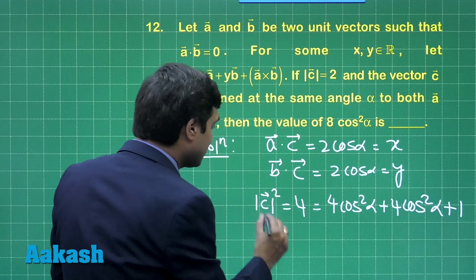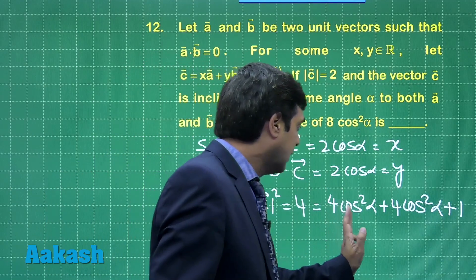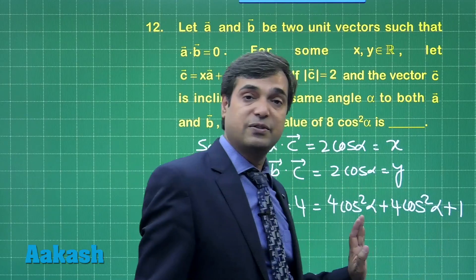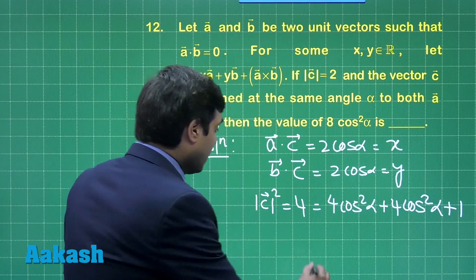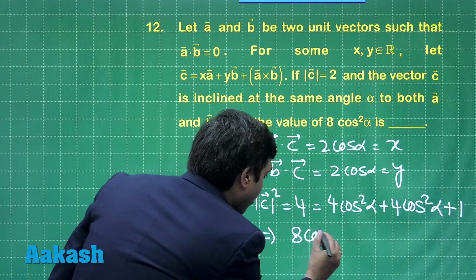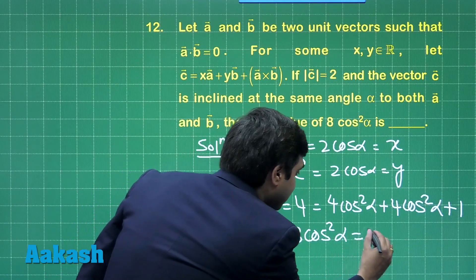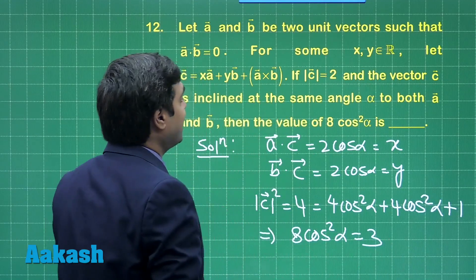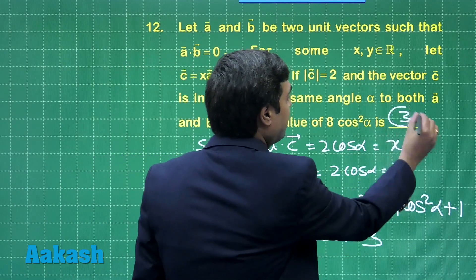Here we obtain mod c square equals 4 equals 8 cos square alpha plus 1. We can get here value as 8 cos square alpha is 3. So the required result as asked in this question is 3.